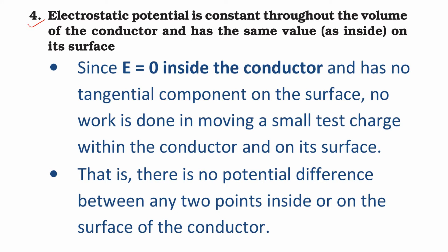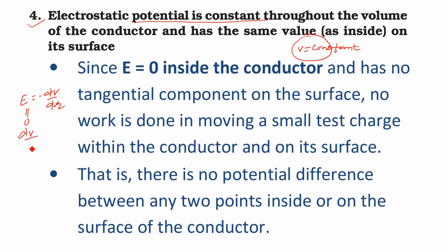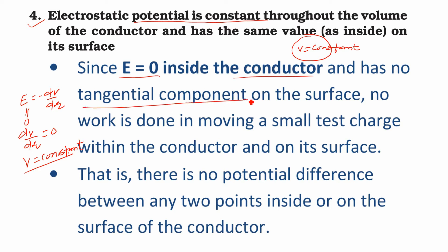Fourth thing to remember: electrostatic potential is constant inside the conductor. Potential is always constant inside the conductor. The reason: we know the electric field is the negative gradient of potential, E = -dV/dr. If the electric field is zero, then dV/dr is zero, which means V is constant. Potential remains constant at the center, on the surface — everywhere inside the conductor. Since electric field is zero inside and has no tangential component on the surface, the conducting surface acts like an equipotential surface.